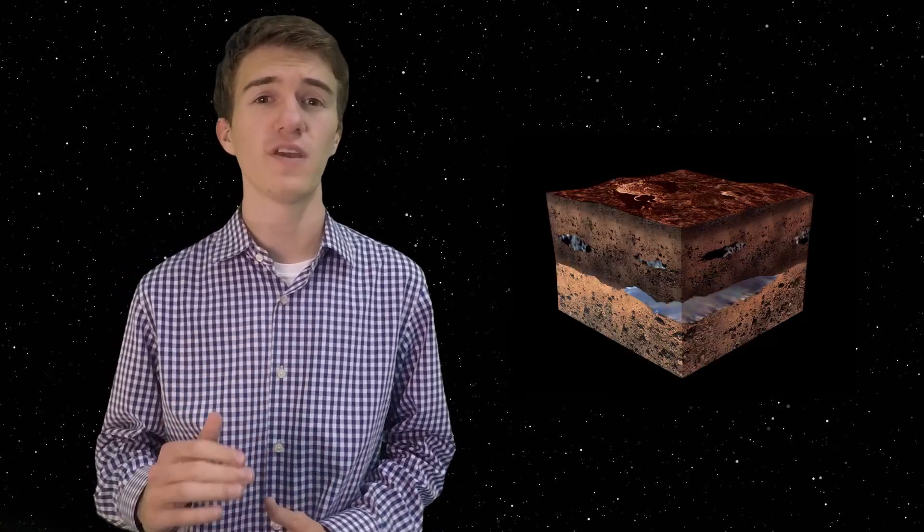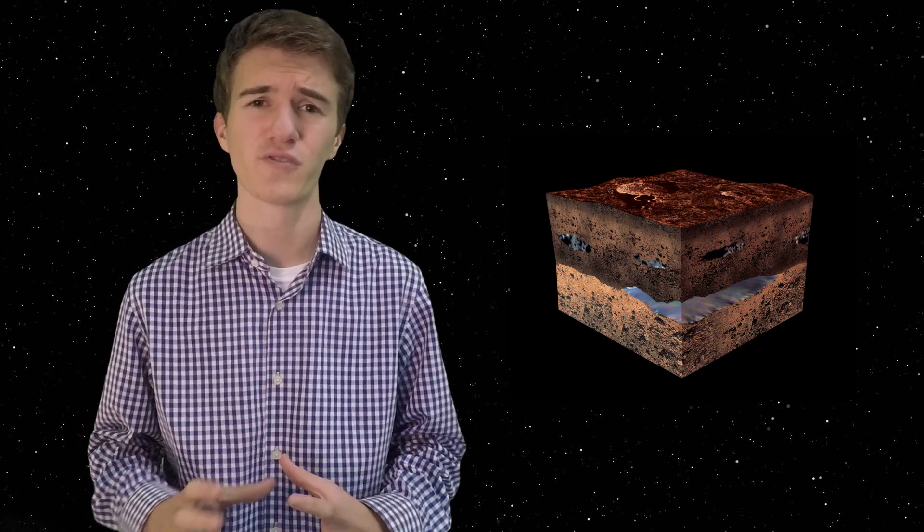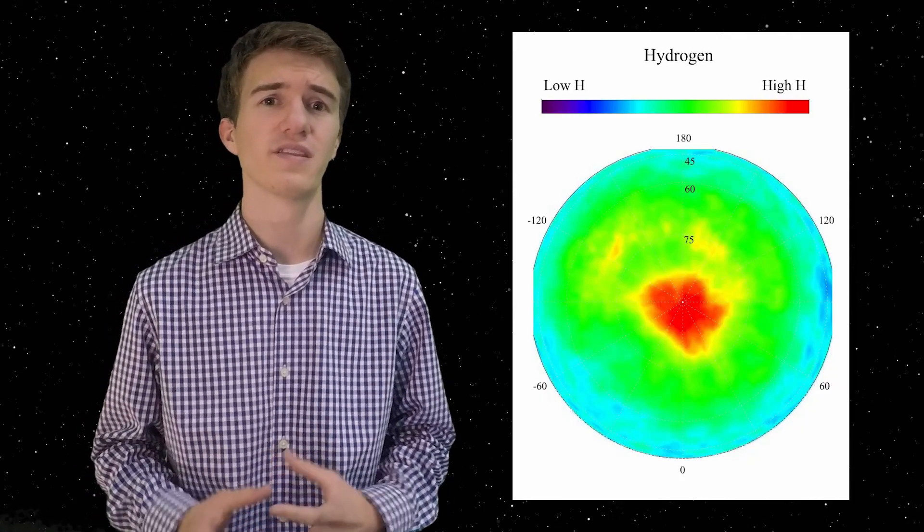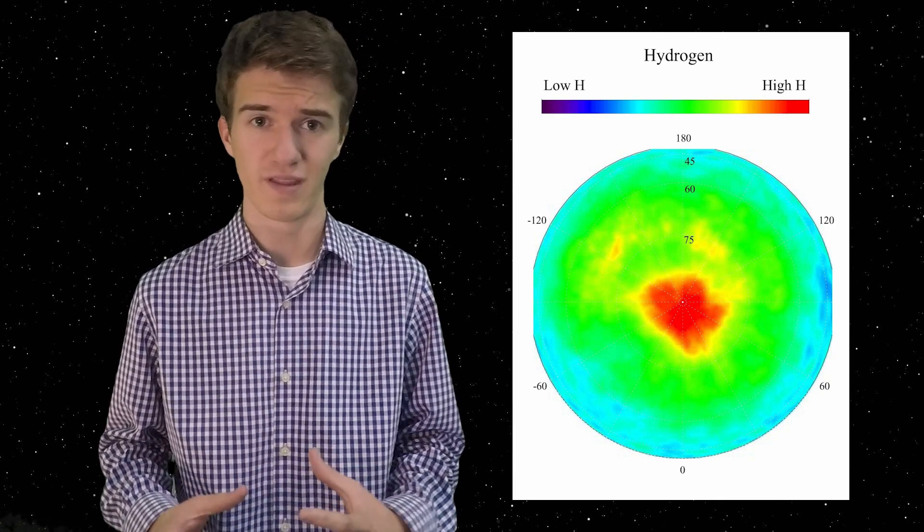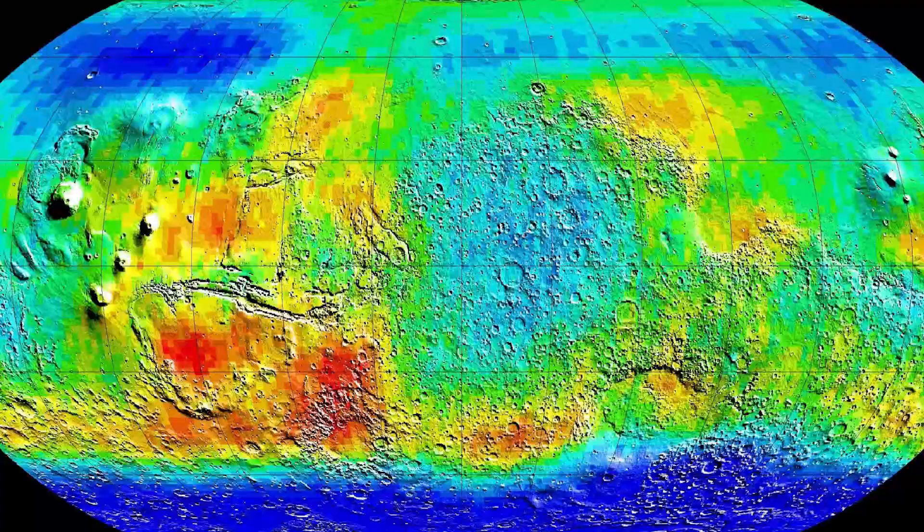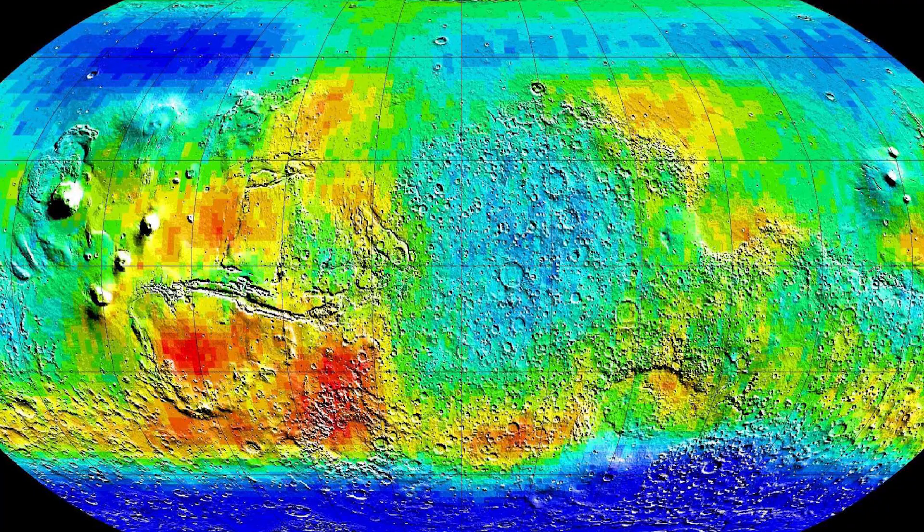Something else that is interesting about Odyssey is after just a few months of being around Mars, it was able to determine that just a few feet or about a meter underneath the surface, there was showing of a lot of traces of hydrogen, which could have meant that there's ice underneath, which could mean that there's a lot more water than we think on Mars. And then later, it was actually theorized that there was water on Mars, which means that this distribution might actually be correct.